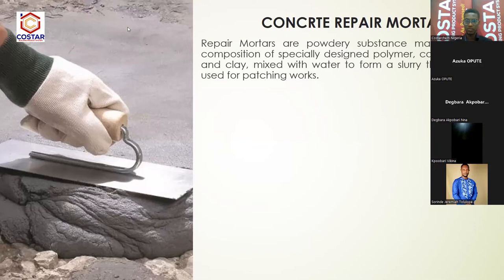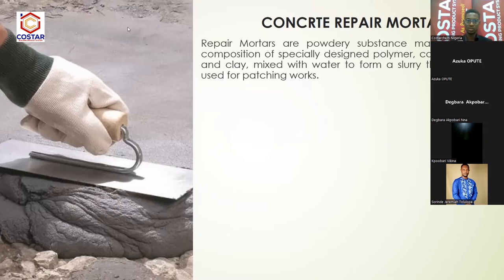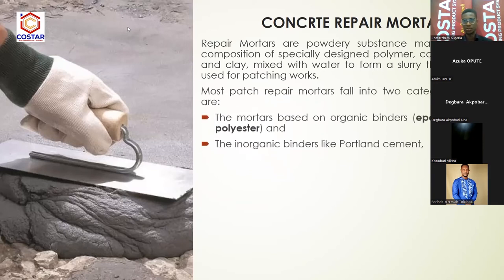Unlike when you use cement and sand, if the sharp sand is too sharp and the aggregates are too big, you will see a line of crack upon the crack you're actually trying to repair. It's very good to use a repair mortar because it's finer and the polymers bind better to the surface on which they are applied. Most patching repair mortars fall into two categories: those based on organic binders such as epoxy resin and polymer, and those based on inorganic binders like Portland cement.